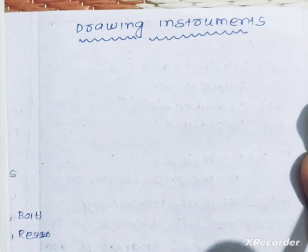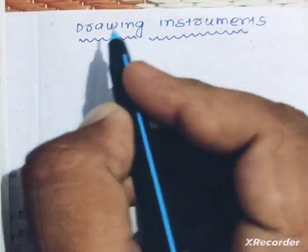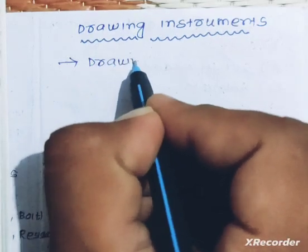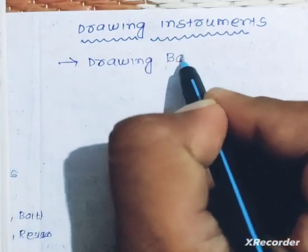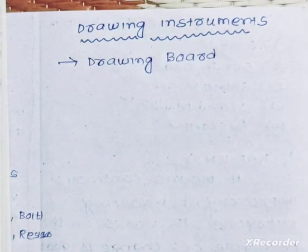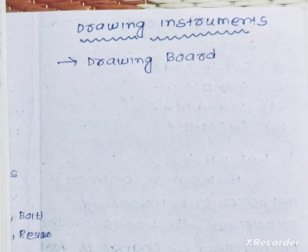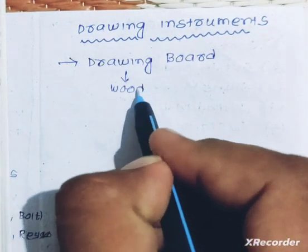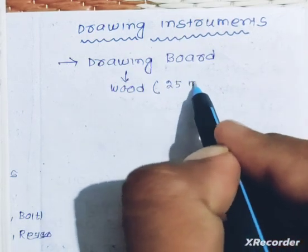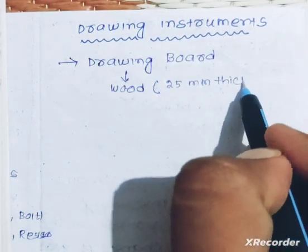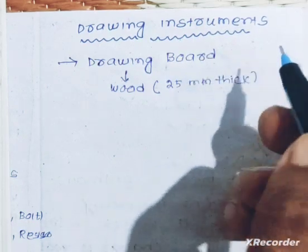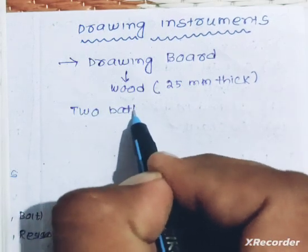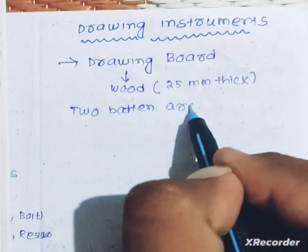When engineering drawing is done, we will need some instruments to do it. The first instrument is the drawing board. Put the drawing board in front of you. Then put the frame in front. The minimum thickness is 25 mm. The paper is placed on the front of the drawing board and the back of the sheet is fixed.